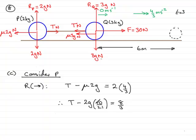So, this term becomes 20G over 21, and if I add that to both sides, I get that T is going to equal 8 thirds plus 20G over 21. And if you work that out on a calculator, taking G to be 9.8, you find that we get that T equals exactly 12 newtons. Okay?